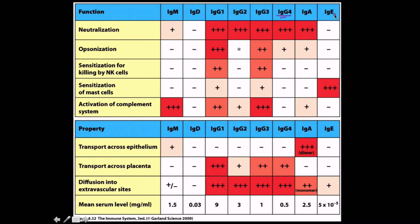IgE — I think of the 'E' as standing for allergies — works primarily with sensitization of mast cells, and that's essentially its only function. Looking at transport properties: IgM and IgA are transported across epithelia. IgA is really abundant in saliva — that's actually why a dog's mouth is said to be cleaner than a human's, because dogs produce a lot of IgA antibodies in dimeric form, increasing binding affinity.